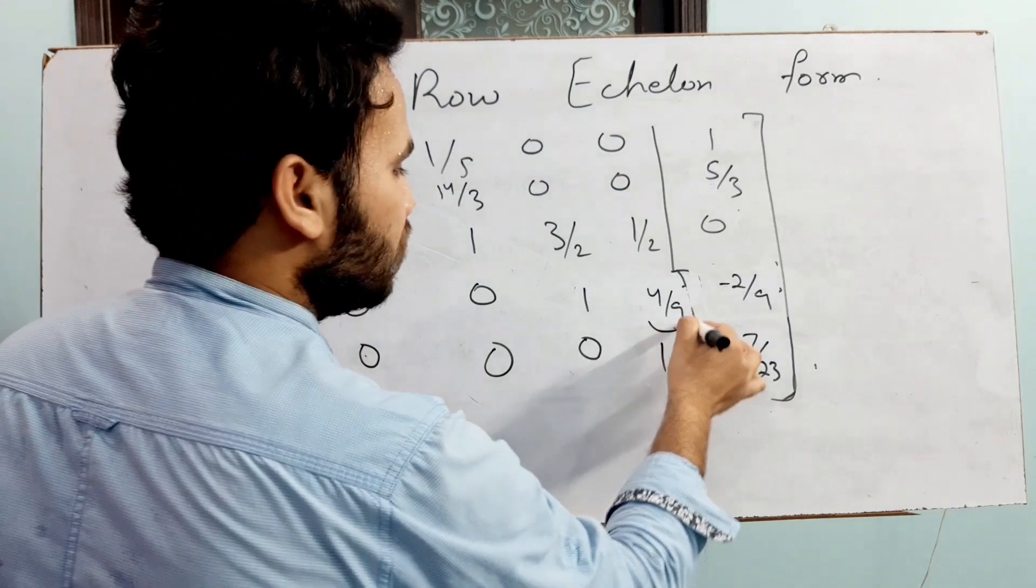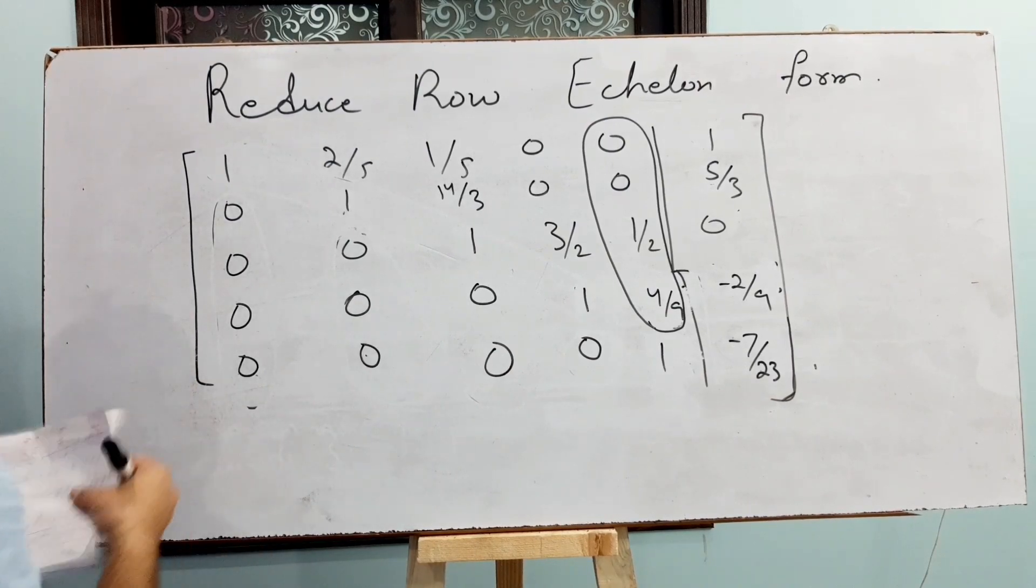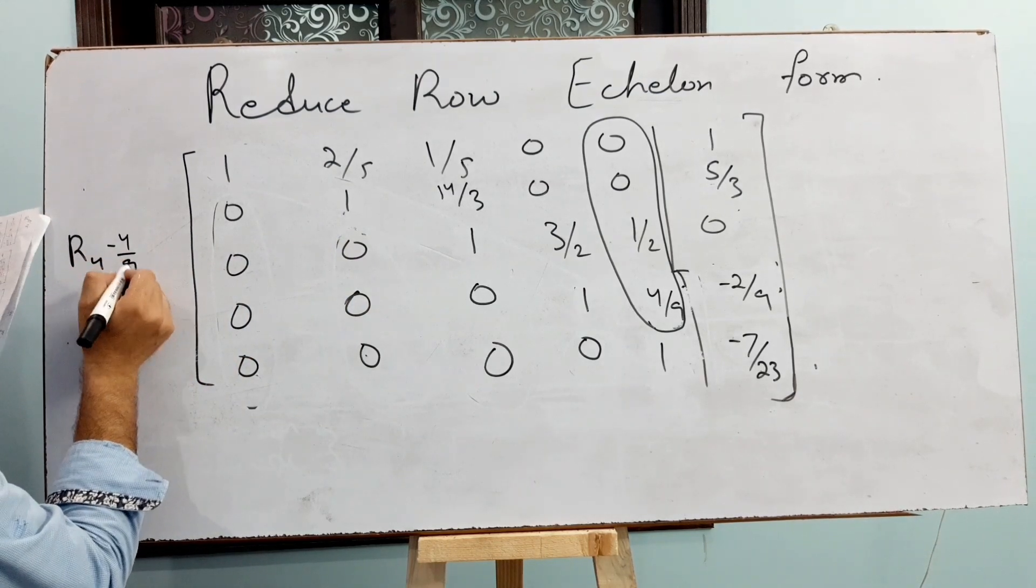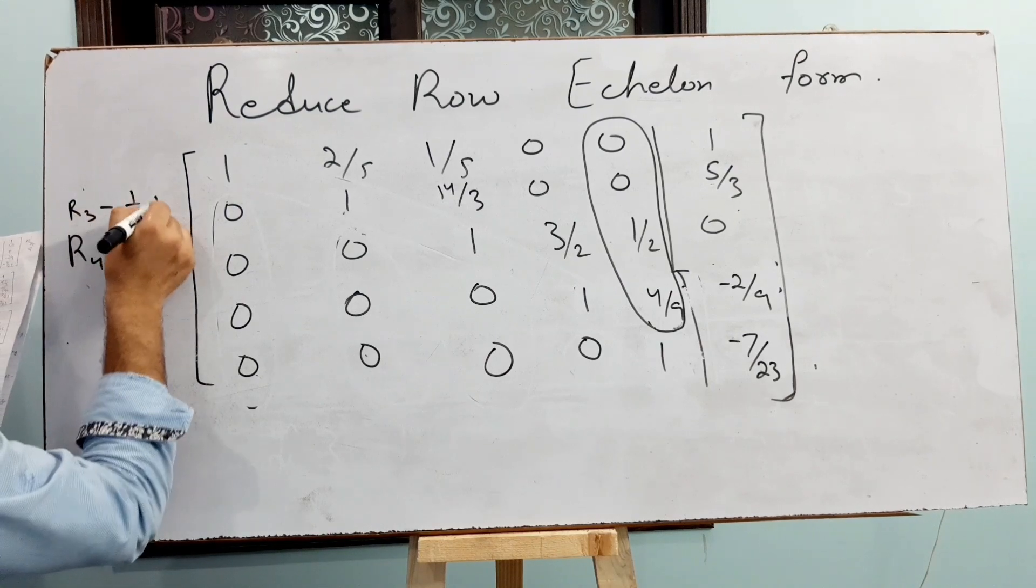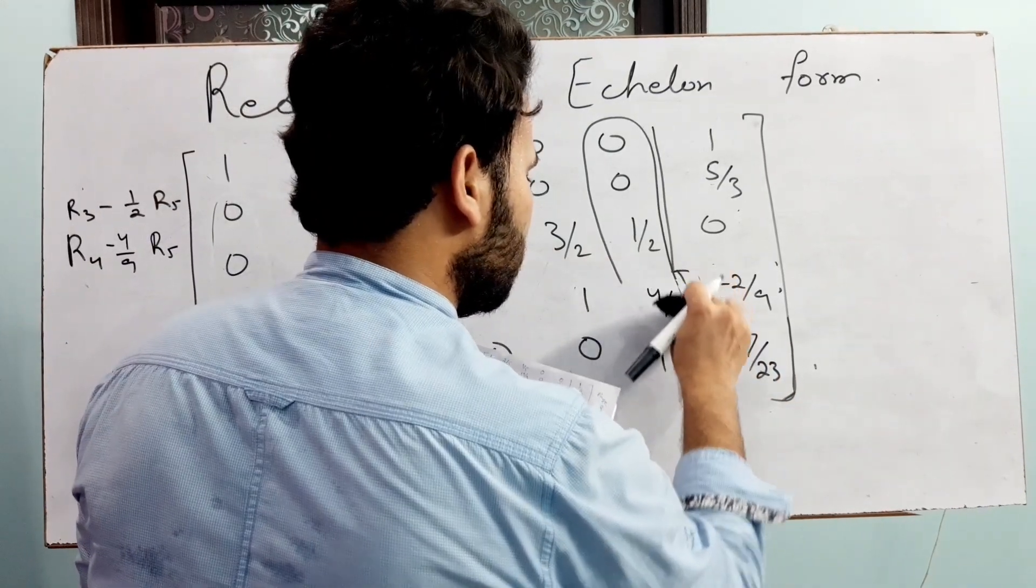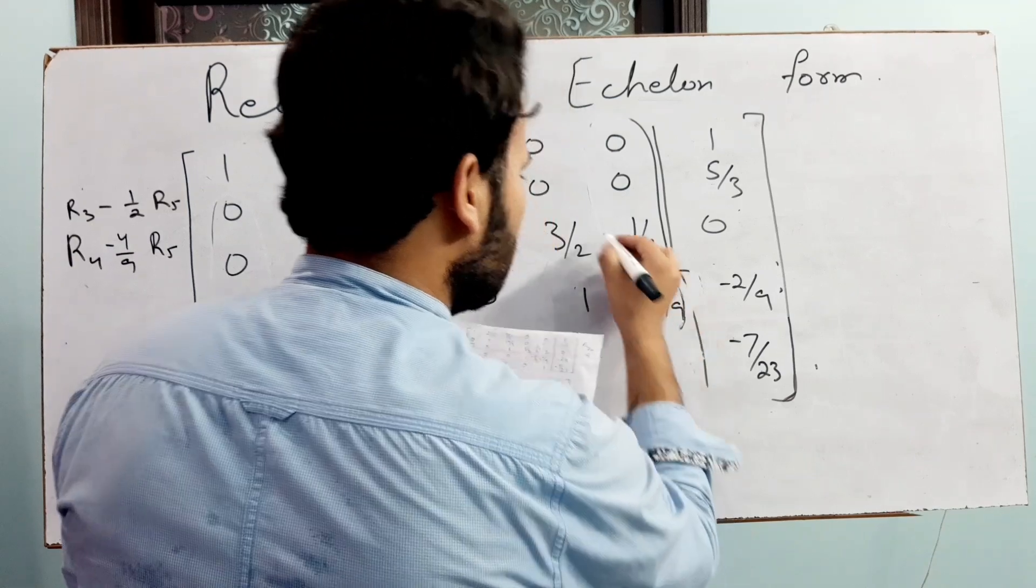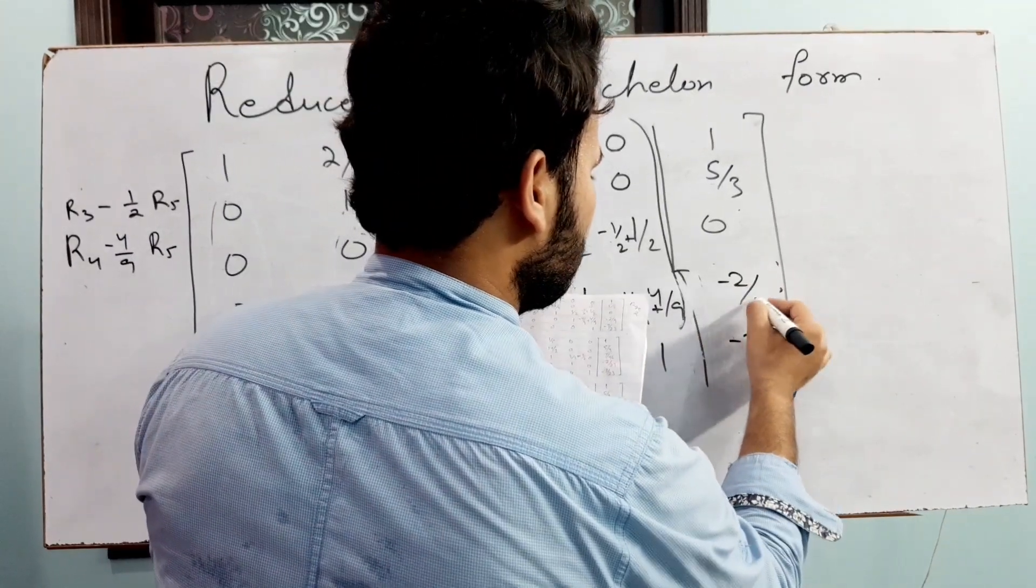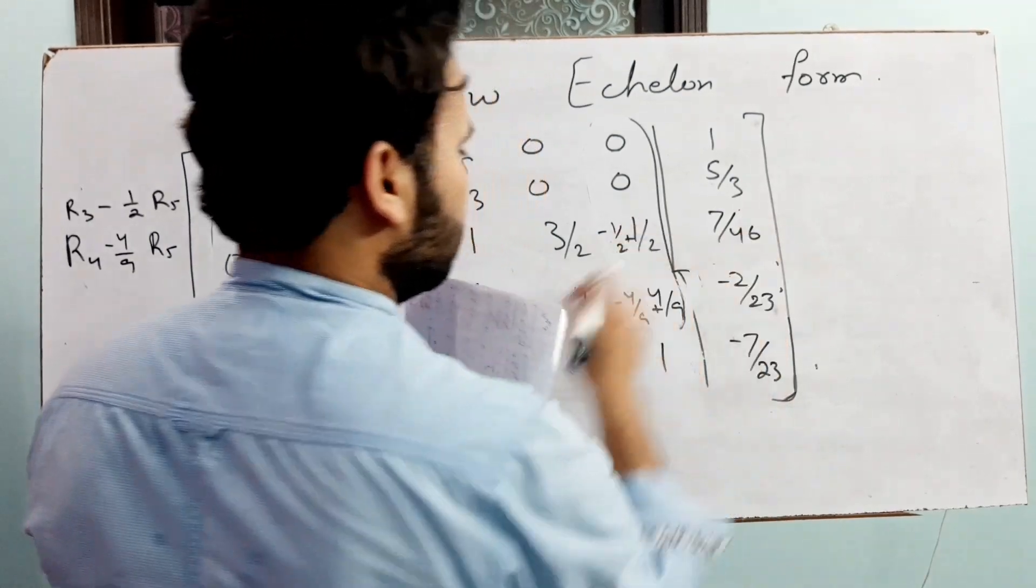So now this upper entry should be 0. For making them 0, just adding R4 minus 4 by 9 times R5 and R3 minus 1 by 2 times R5. This entry will change and this will be minus 2 by 23 and this will be 7 by 46. So this is minus 6 and these both entries will be 0.